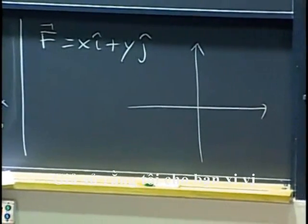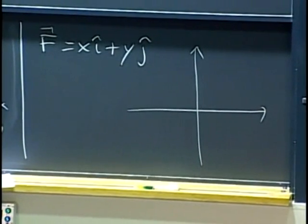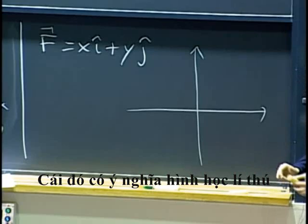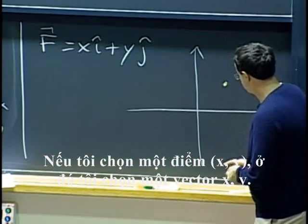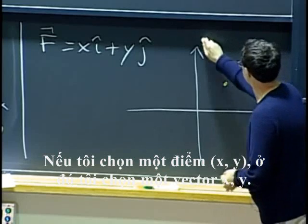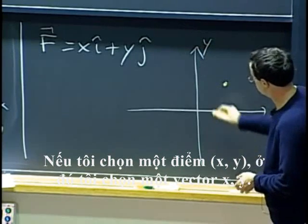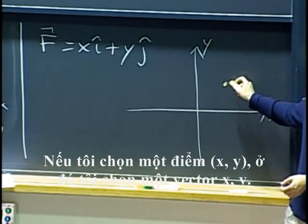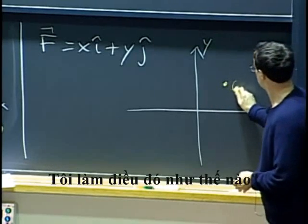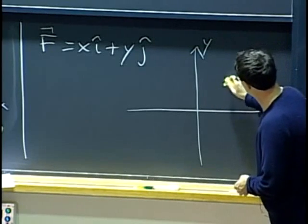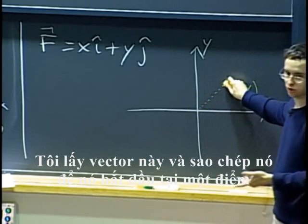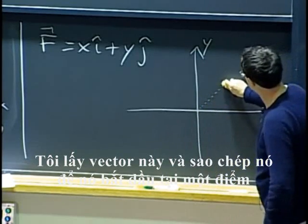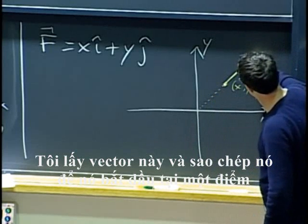Let's say I give you xi plus yj. That one has an interesting geometric significance. If I take a point xy, there I want to take the vector xy. How do I do that? Well, it is the same as the vector from the origin to this point. I take this vector and I copy it so that it starts at my given point.